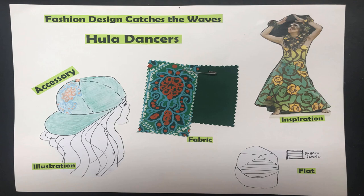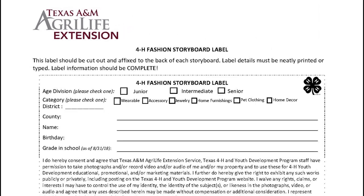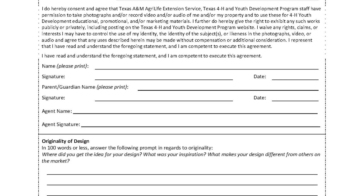Once you have the flat, illustration, and fabric trims, all you need is your entry form — you need this in order to compete. You can download this form on the Texas 4-H website or visit your local extension office where they can print it out for you. This form is essential. At the very top, you fill in your age category, who you are, county, and all that. Underneath, you'll need signatures: you need to sign it, your parents need to sign it, and your county extension needs to sign it.